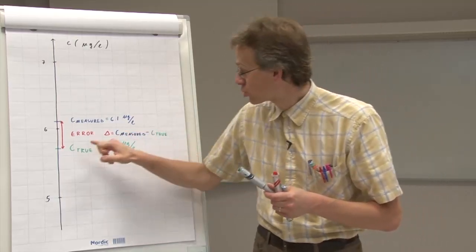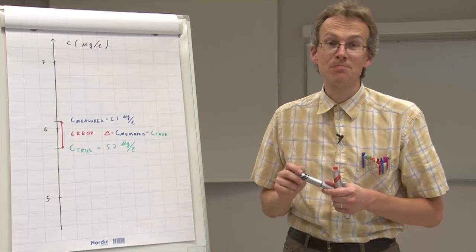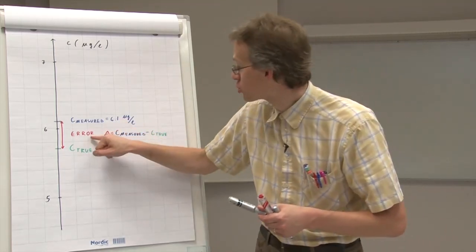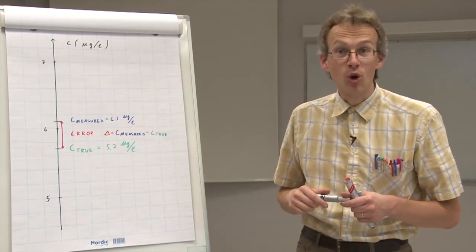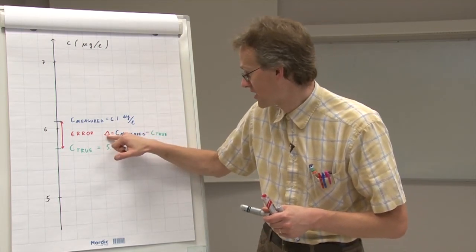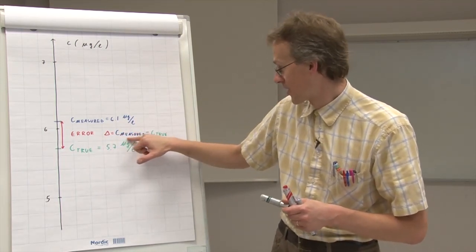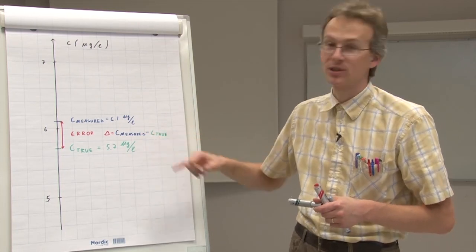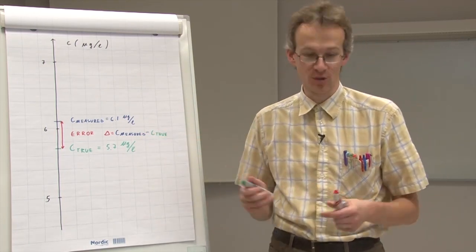Now, as true value for us is an abstract concept, so is also the error. Because if we would know what the error is, then by obviously knowing our measured value, we would be able to calculate the true value. But this is not possible.